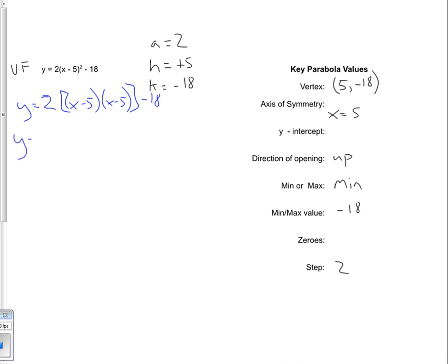So when I apply my FOIL pattern, that's going to leave me with x squared minus 5x minus 5x plus 25, and then minus 18. I'm going to collect my like terms that are in the middle there. So this is going to give me x squared minus 10x plus 25, and then minus 18.